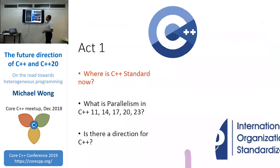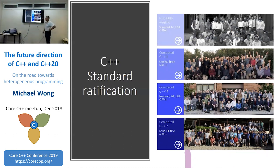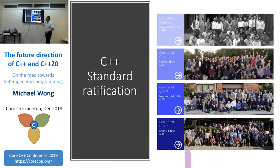I'm going to jump into act one. This shows vacation pictures for every standard meeting: C++98, C++11 in Madrid, C++14 in Washington State (Issaquah), and C++17 in Kona, Hawaii. The most notable thing people observe is that the group keeps getting bigger and bigger. C++ is absolutely popular in terms of the number of people showing up — from about 30-40 originally, to 50 when I started coming, to about 120, and now up to about 180 every meeting.